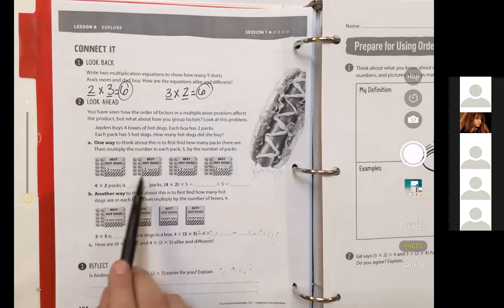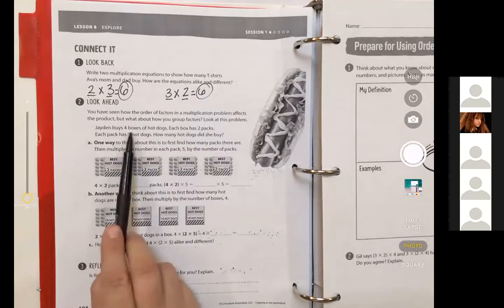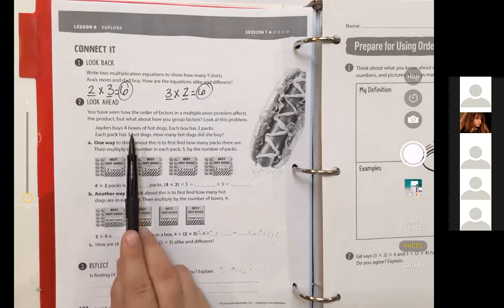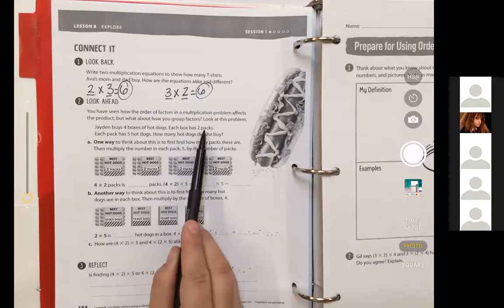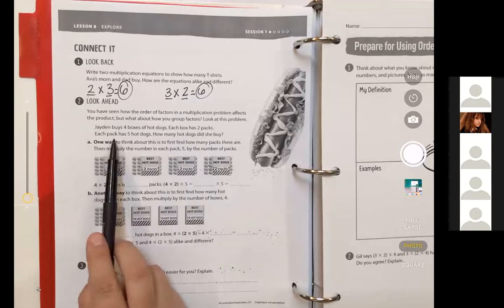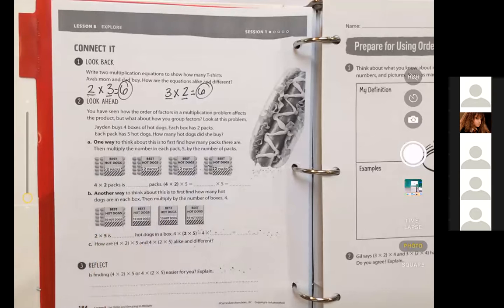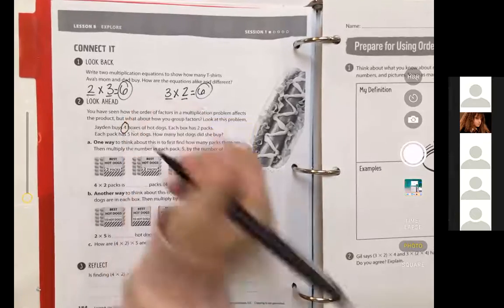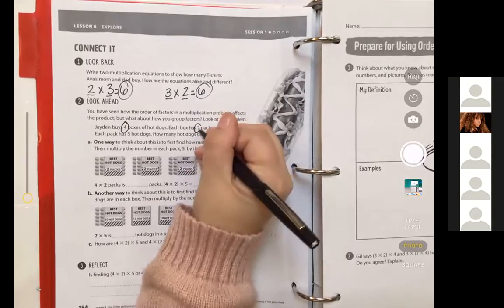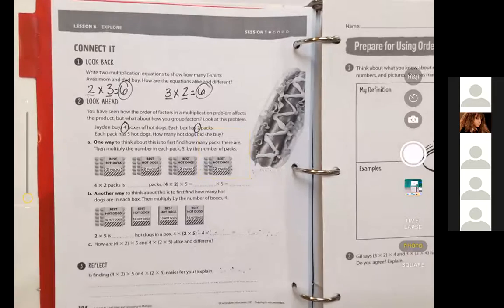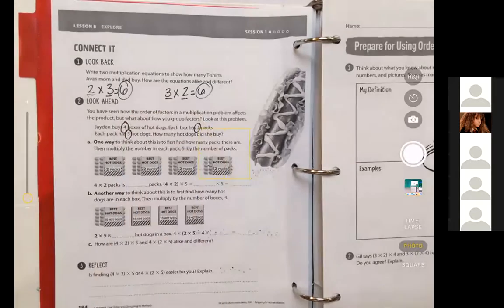So if we kind of skip down to here, this is our question. Jayden buys four boxes of hot dogs. Each box has two packs. Each pack has five hot dogs. That was a lot of numbers, so I'm going to go through and circle. We have four boxes of hot dogs. Each box has two packs. And each pack has five hot dogs. How many hot dogs did she buy?